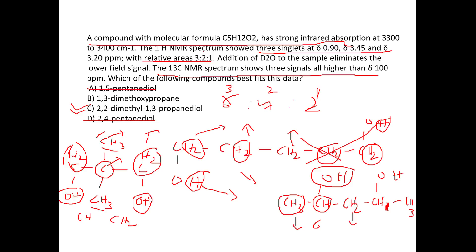The correct answer is option C. We know there is an OH group because the IR shows a strong absorption at 3300–3400 cm⁻¹, which corresponds to the OH peak. Additionally, addition of D₂O eliminates the lower-field (downfield) signal at ~3.45 ppm, because the ionizable OH proton exchanges to become OD, and OD does not show any proton signal.